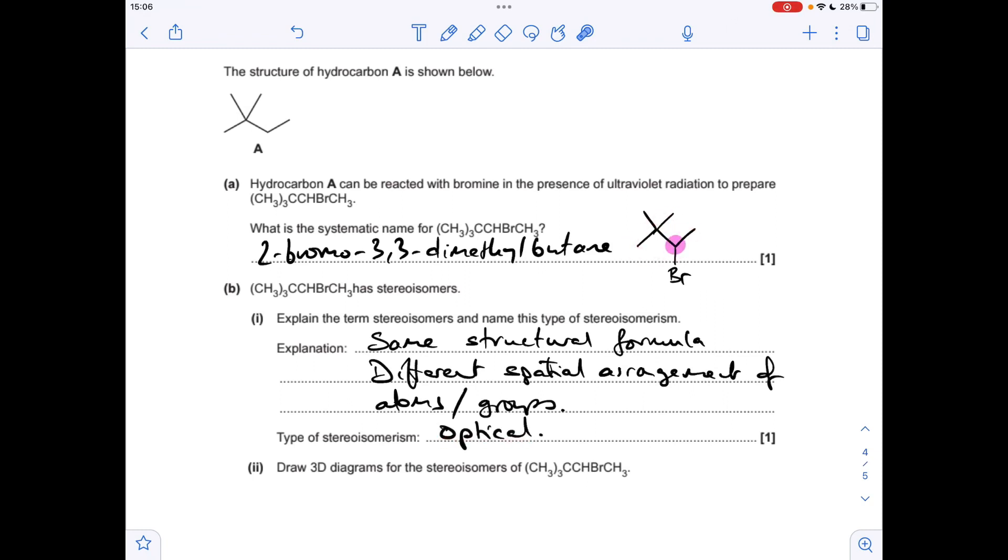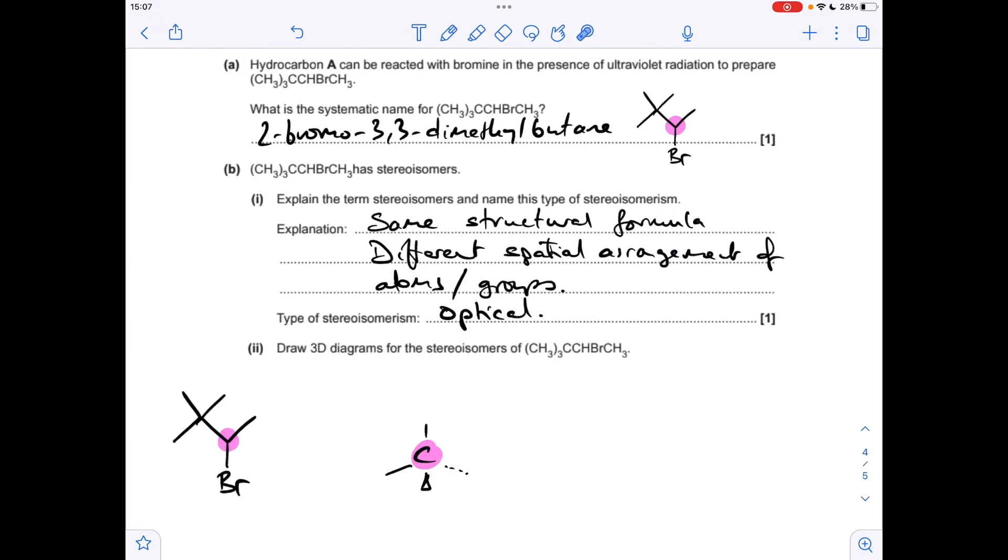What type of stereoisomerism is this going to show? The answer is optical, and that's because this haloalkane has a chiral center - that one I've highlighted there. We've got four different groups attached to that carbon: we've got a methyl, we've got a bromine, we've got a hydrogen, and we've got this group here (these three methyl groups from this carbon).